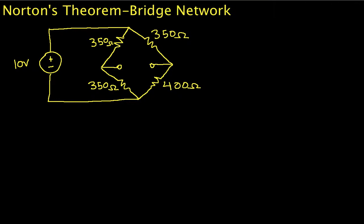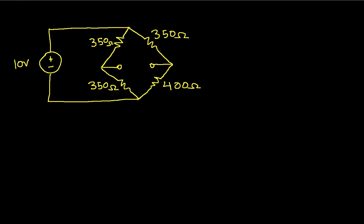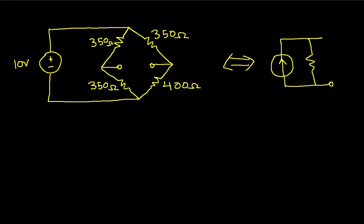Welcome to this video in which we will find the Norton's equivalent circuit for a bridge network — specifically the bridge network shown in the picture. We're looking for a circuit that is a current source in parallel with a resistor. The resistance we call RTH because it's the same as the Thevenin equivalent resistance, and we need to find the short circuit current. The steps involved are to find RTH and ISC.